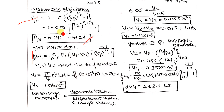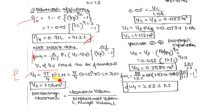First, calculate the swept volume Vs using: Vs = (π/4) × d² × L × N, where d is diameter, L is stroke length, and N is the number of revolutions per minute — because for each revolution one full cylinder volume is displaced. Substituting all values gives Vs = 1.06 m³.